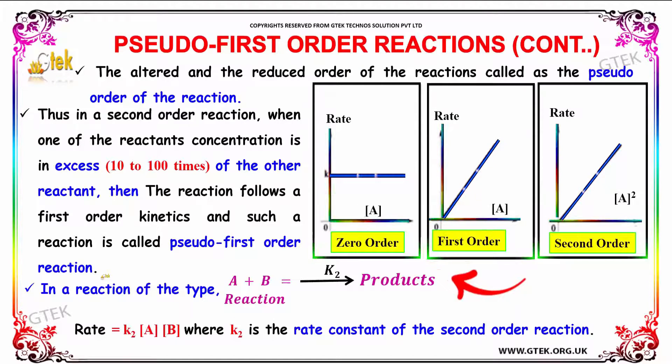In a reaction of the type A plus B gives the product with the rate constant k2. Rate equals k2[A][B] where k2 is the rate constant of the second order reaction.